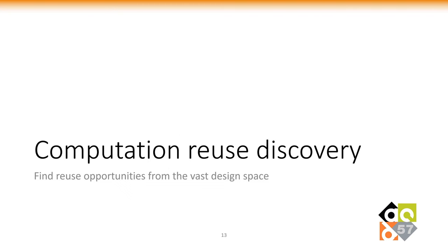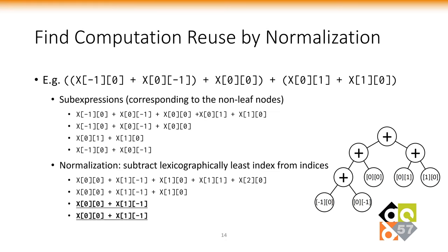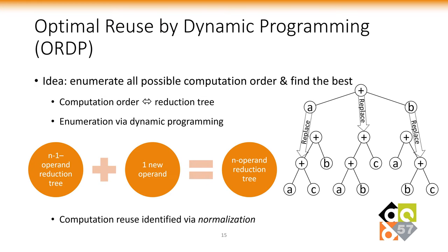I'll first address how we explore the large design space. With a given computational order, the reduction expression can be represented using a binary tree. We first identify the computational operations as sub-expressions, which correspond to non-leaf nodes of the tree representation. To find all reusable operations, we apply normalization, defined as subtracting the least index from all indices. By doing this, we can easily identify operations that can be reused. A brute force approach would enumerate all possible orders via dynamic programming, since we can enumerate all n-operand expressions by adding a new operand to all n-1 operand expressions.